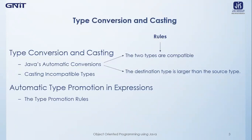Now we have to learn both automatic type conversions and casting. When one data type is assigned to a variable of another data type, an automatic type conversion will take place if and only if two conditions are satisfied. The first rule is that the two types are compatible. The second rule is that the destination type is larger than the source type. Both rules must be satisfied for Java to perform automatic type conversion.